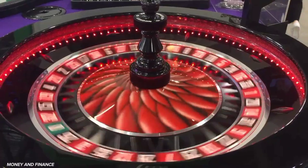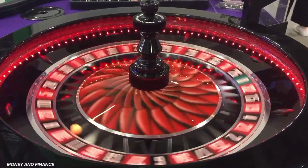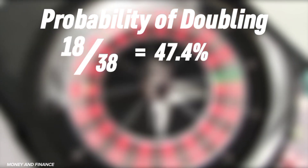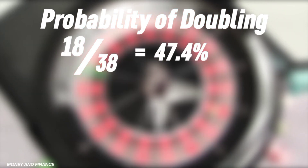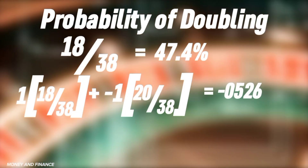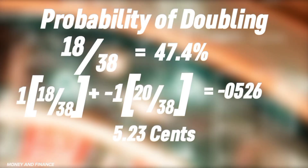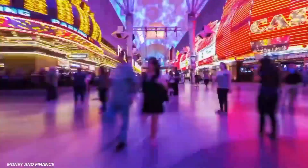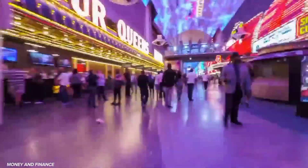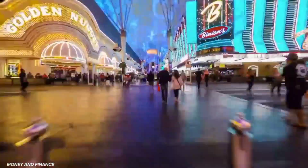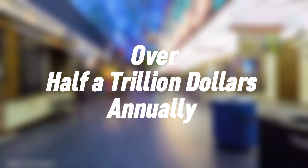However, the reality is different. With the inclusion of the zeros, the actual probability of doubling your money decreases to 47.4%. Consequently, for every dollar you play, you can anticipate a loss of 5.2 cents. Despite this disparity between fair odds and those offered by casinos, these establishments globally generate over half a trillion dollars annually.